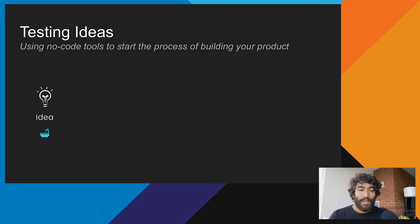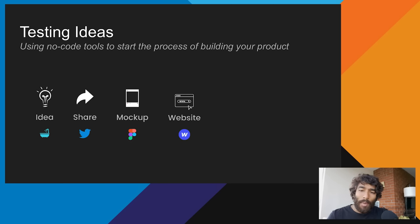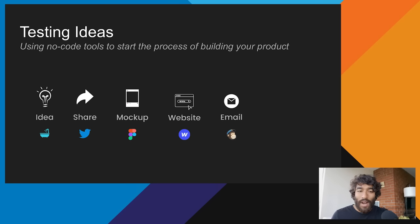Using no-code tools to start building your product might look like this. Step one: you get your idea. Step two: you share or validate it a bit — by tweeting it, writing a blog post, or sharing it in a subreddit. Step three: start making a mockup of your product with tools like Figma, Canva, or Sketch. I include design tools in no-code because they're designed so anyone can learn them quickly — they're delightful and fun to use. Step four: your product mockup is done, so it's time to build a simple landing page. The goal is to put something out there and see if there's interest — you don't need an overly designed website. I use tools like Webflow, Notion, Squarespace, or Card.